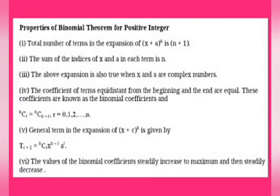That means in the case of complex numbers x and a, this expansion is possible. The fourth property of the binomial theorem: the coefficients of the terms equidistant from the beginning and end are equal, and these are known as binomial coefficients. That means ncr is equal to ncn minus r, where r equals 0, 1, 2, 3, etc., up to n. Equidistant, they are symmetric in this expansion.